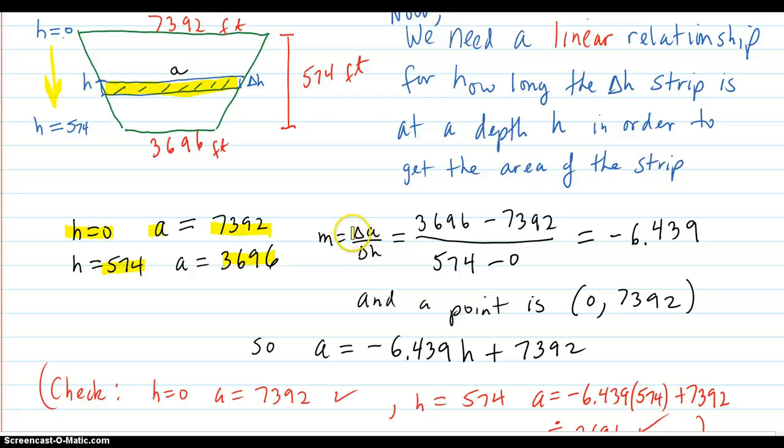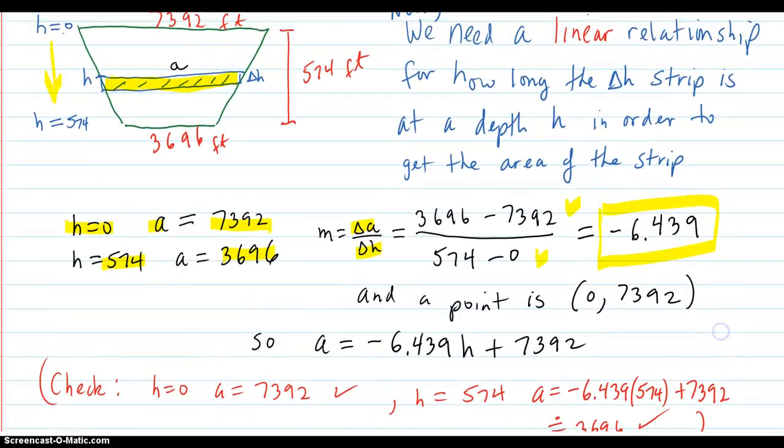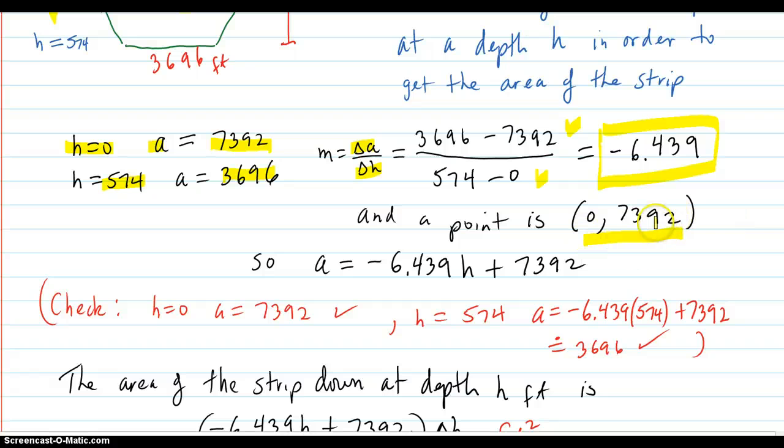So the slope is the delta a over the delta h, which is right here and here, and that comes out to be this number here, negative, because as you go deeper you get less length across. So it's a negative slope relationship. And a point we can use is this first point, (0, 7392). So that's an easy y-intercept of 7,392, and there's your slope. So that's the linear relationship.